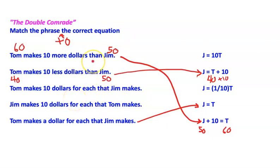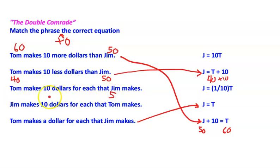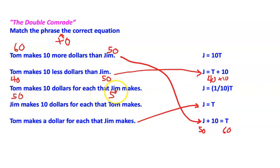Now, 'ten dollars for each' — this is where it gets tricky. Tom makes ten dollars for each dollar Jim makes. Let's say Jim makes five dollars — Tom would make ten dollars for each dollar Jim makes, so Tom would make fifty dollars. So we take Jim's dollar amount times ten to get Tom.